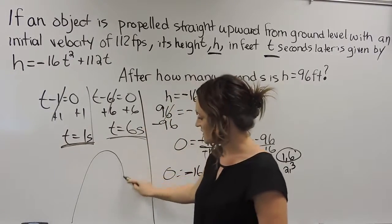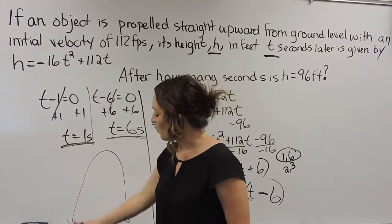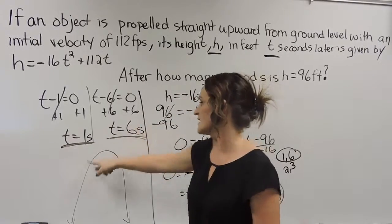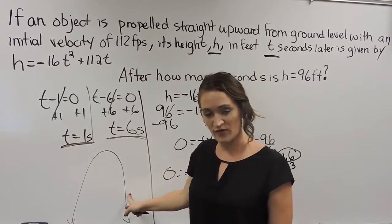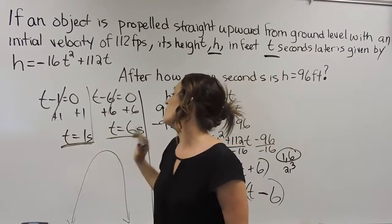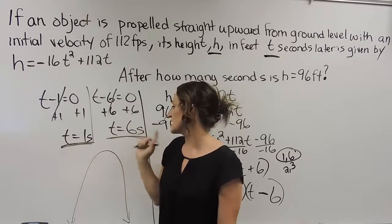So you're going to kind of do this upside down parabola thing over here. So at one second it reached that 96 feet and then at six seconds is when it was coming down over here so that it hit 96 feet again. So both of these are our solutions here. One second and six seconds.